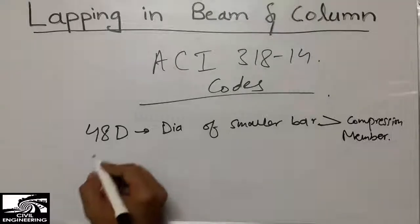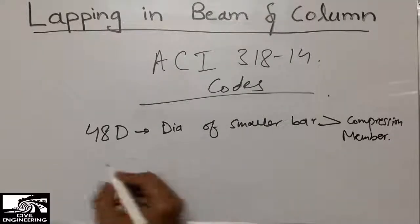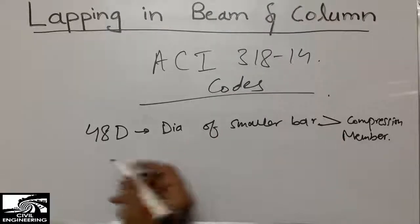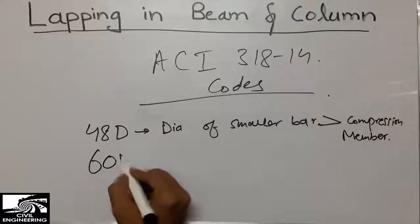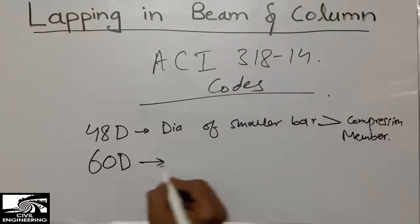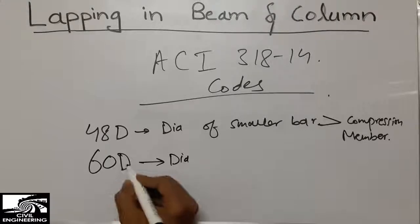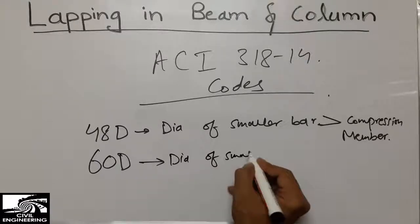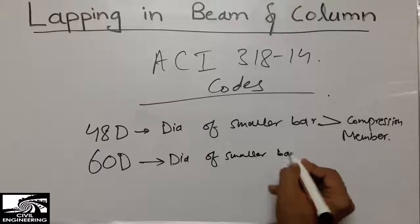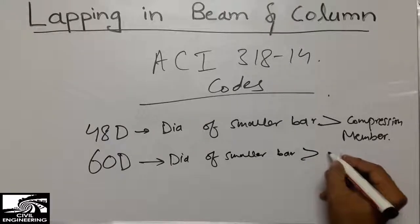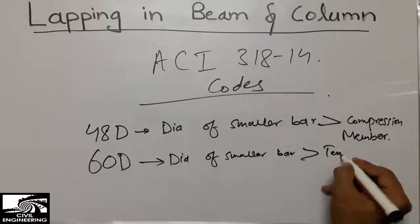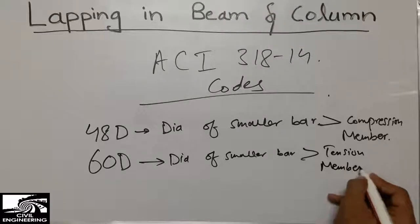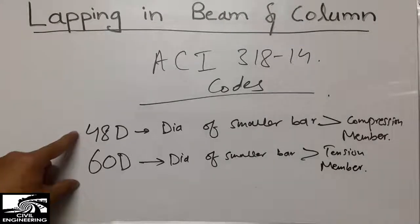For tension members like beams and slabs, which are flexural members, we provide a lapping length of 60d according to ACI code, where d is the diameter of the smaller bar. In actual practice we calculate lapping length according to these two formulas.